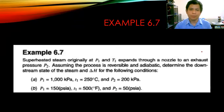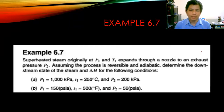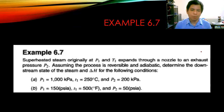Let's try to solve Example 6.7. Superheated steam originally at P1 expands through a nozzle to an exhaust pressure of P2. For case A, the initial pressure P1 is 1,000 kPa and the initial temperature T1 is 250 degrees Celsius. The steam expands to a final pressure P2 of 200 kPa.